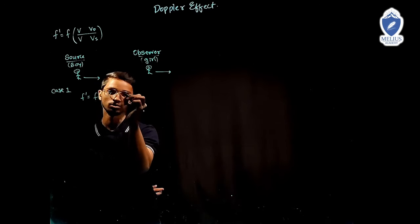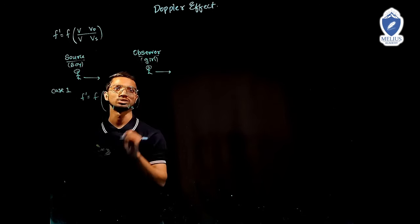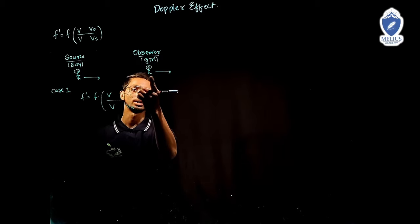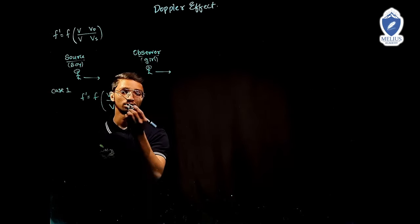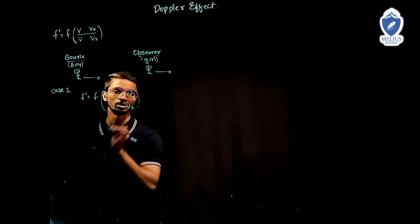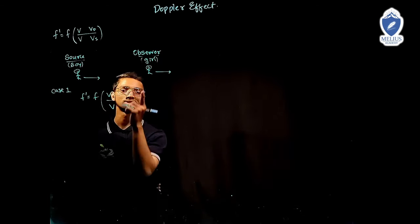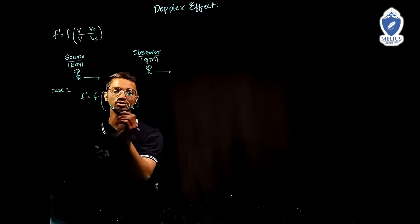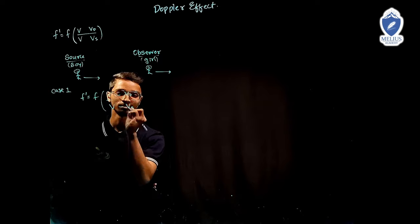The formula: F' = F × (V ± V_O) / (V ± V_S). The observer is going away from the source, so the frequency needs to decrease. Observer's velocity is in the numerator; to decrease the frequency, the numerator should be decreased — so there is a minus sign for V_O. The source wants to increase the frequency; source is in the denominator, so to increase the frequency, the denominator should be decreased — we add a minus sign for V_S. Result: F' = F × (V − V_O) / (V − V_S).